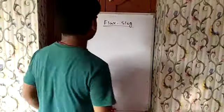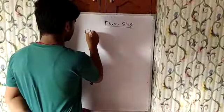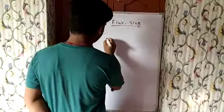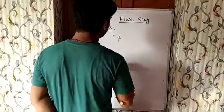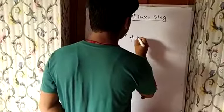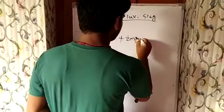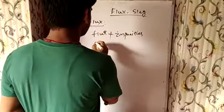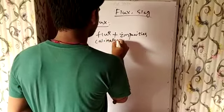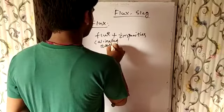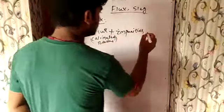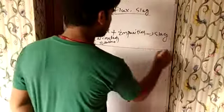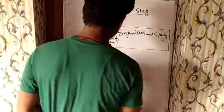Today, we will discuss Flux and Slag. First, what is the term Flux? Flux means these are the chemical substances which react with impurities. There is calcination or calcinated or roasted ore that reacts with impurities to form slag. So you can simply write: Flux + impurities = Slag.